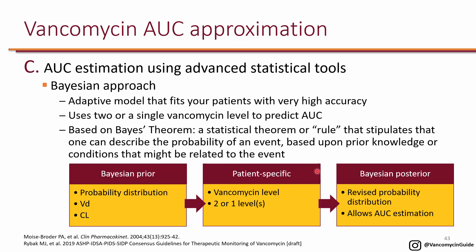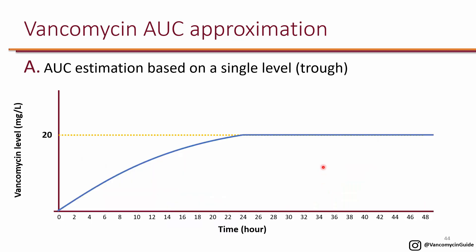One last thing to talk about is vancomycin continuous infusion. With intermittent infusion, you can estimate AUC from the trough. With continuous infusion, you start from zero and infuse the vancomycin dose over 24 hours — extending the infusion time all the way to 24 hours. Within 24 hours you reach steady state, and then you get a flat line because you're continuously infusing over time. You no longer get a peak and trough — just a flat line. Any level you obtain is both a random level and your peak and trough simultaneously.